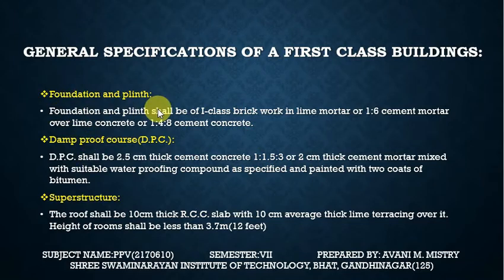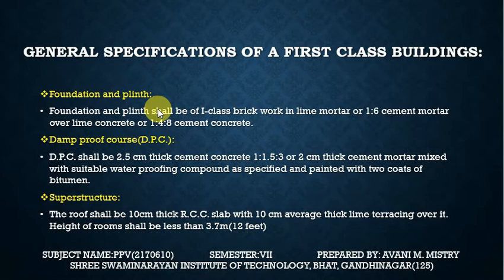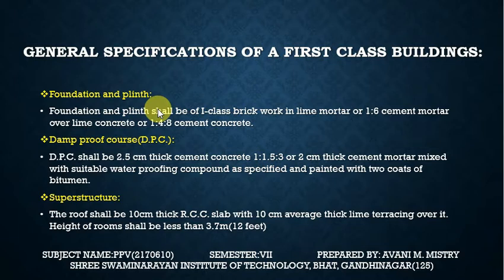General specification of a first-class building: First — foundation and plinth. The foundation and plinth shall be first class brickwork in lime mortar or 1:6 cement mortar over lime concrete of 1:4:8 cement concrete. DPC — Damp Proof Course — shall be 2.5 cm thick cement concrete 1:1.5:3 or 2 cm thick cement mortar mixed with suitable waterproofing compound as specified and painted with two coats of bitumen.